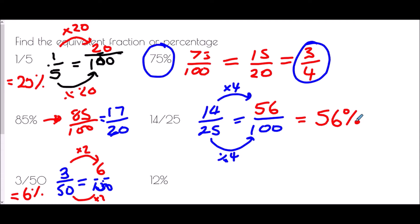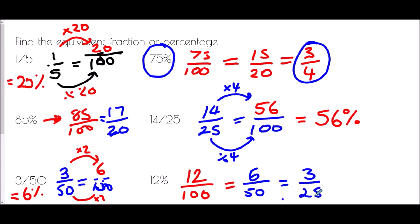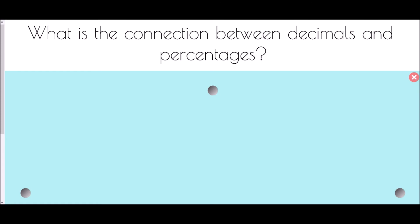For 12 percent as a fraction: percent means out of 100, so it's 12 over 100. Simplify — divide both by 2 to get 6 over 50. Divide both by 2 again to get 3 over 25. Is there a number that goes into both 3 and 25? Only 1, so the final answer is 3 over 25.